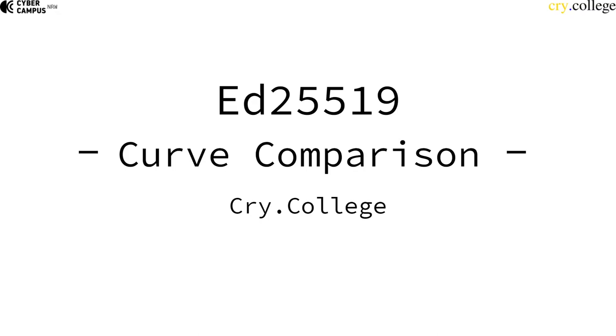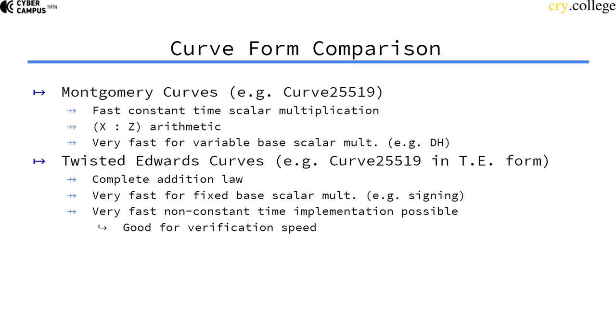So we've seen ED25519. One question that might come up is why did we go through the effort of doing it with an Edwards curve? Why didn't we just use the Montgomery curve? That's a good question, so I want to make a quick comparison between Montgomery curves and twisted Edwards curves.